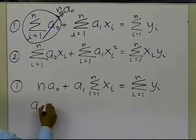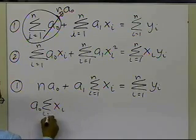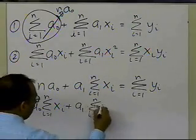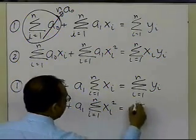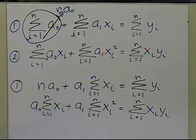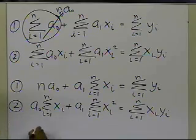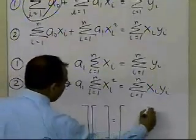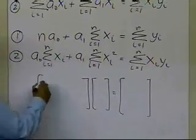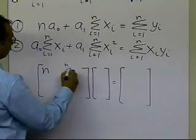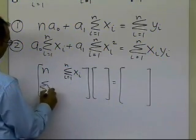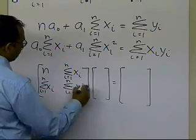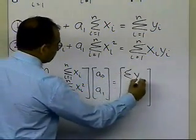For the second equation, taking a0 and a1 outside as constants: a0 times summation (i=1 to n) of xi, plus a1 times summation (i=1 to n) of xi squared, equals summation (i=1 to n) of xi·yi. So I have two equations, two unknowns, and I'm going to write them in matrix form to clearly identify the coefficient matrix, the unknowns, and the right-hand side vector. You can solve these using Cramer's rule, Gaussian elimination, or simple high school algebra.